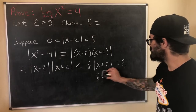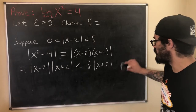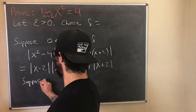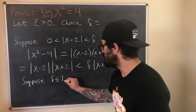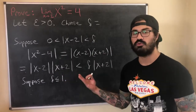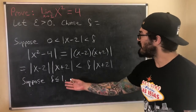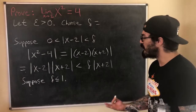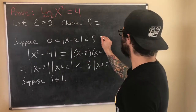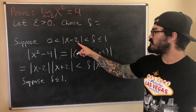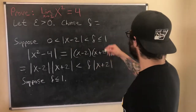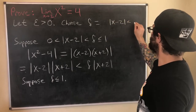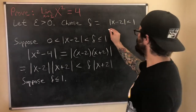This is where the cleverness of the proof comes in. We make a little assumption: suppose delta is less than or equal to 1. It turns out you could choose any positive real number here — two, three, four — we just choose 1 because it's convenient. This allows us to eventually put an upper bound on the |x + 2| expression. If delta ≤ 1, then |x − 2| is strictly less than 1, so if we remove the absolute value we get −1 < x − 2 < 1.